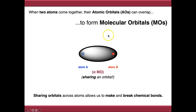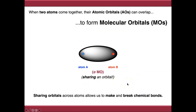Molecular orbitals are shared between atoms, so sharing orbitals across multiple atoms allows us to make and break chemical bonds. This is going to be really important for building up the structure of organic molecules.